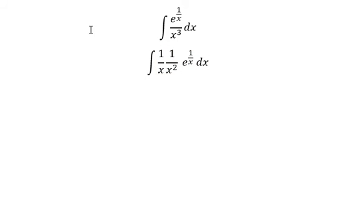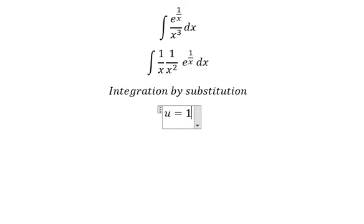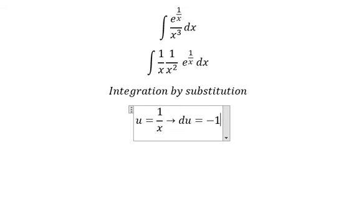Next, we need to use integration by substitution. So I will put u equals to 1 over x. Later we do first derivative for both sides. So we have du equals to negative 1 over x square dx.